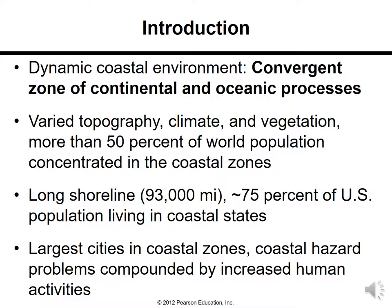This varied topography, climate, and vegetation hosts more than 50% of the world population concentrated in coastal zones. Nearly 75% of the US population lives in coastal states. Coastal areas in western and eastern US have highly populated cities and states. Coastal hazard problems are compounded by increased human activities — more people means more structures being built, which can cause a lot of coastal hazards.